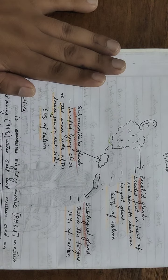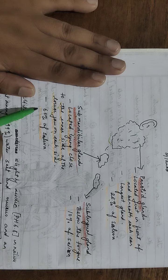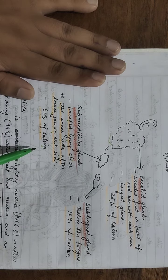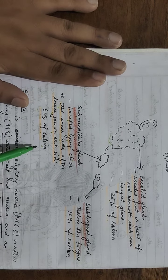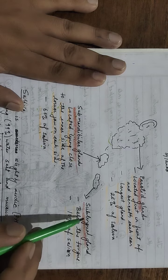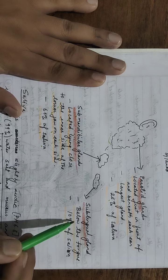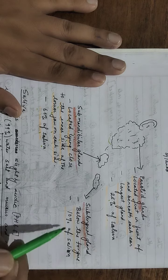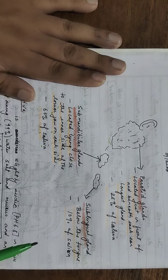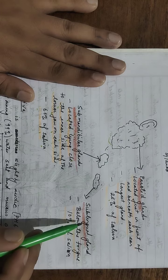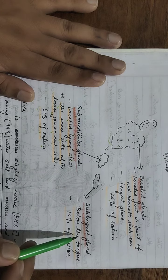60% of saliva is secreted by this submandibular gland. Next one is sublingual gland, below the tongue, which secretes 10% of saliva.